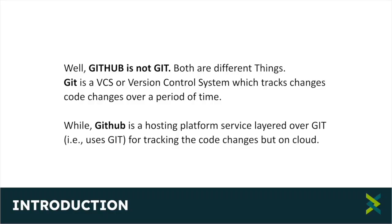Coming to the introduction: GitHub is not Git — both are different things. Git is a version control system, the most popular in the world. A version control system records changes made to code over time in a special database called a repository. We can look at a project history to see who did what changes, when and why. And if we screw something up, we can easily revert to an earlier state of the project.